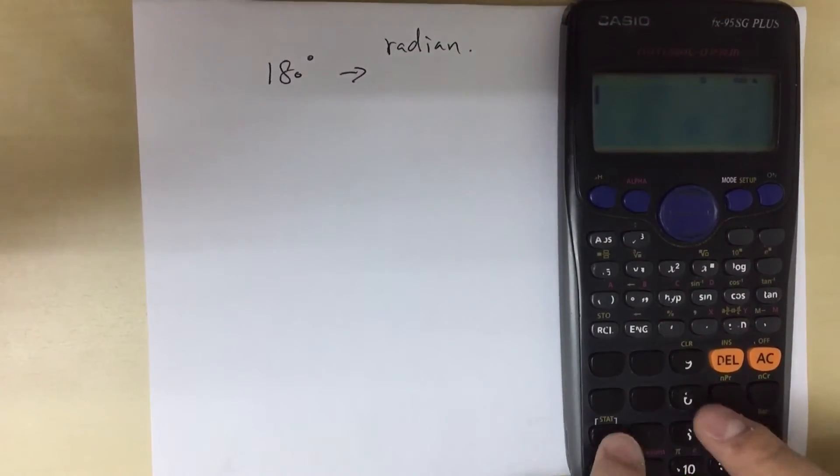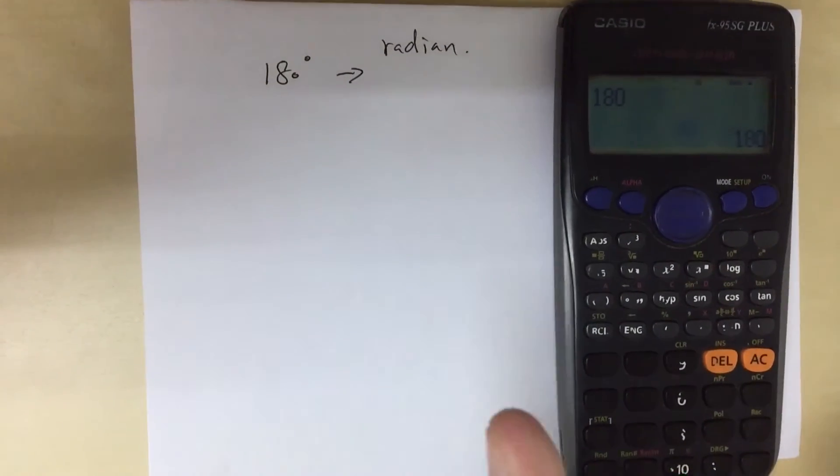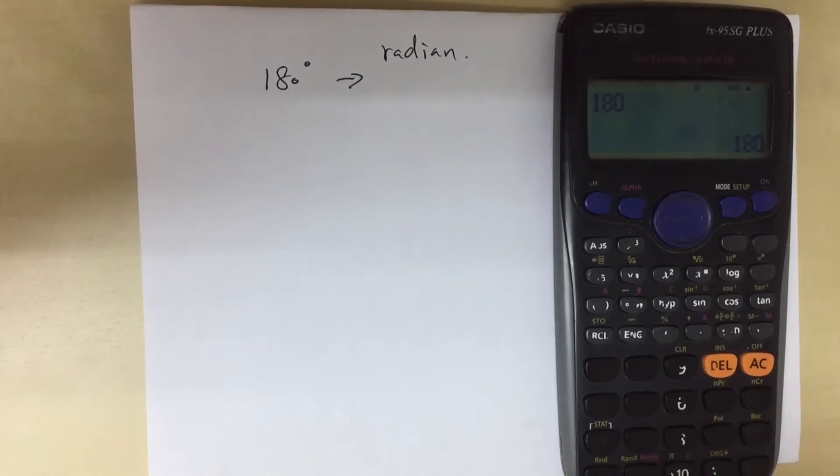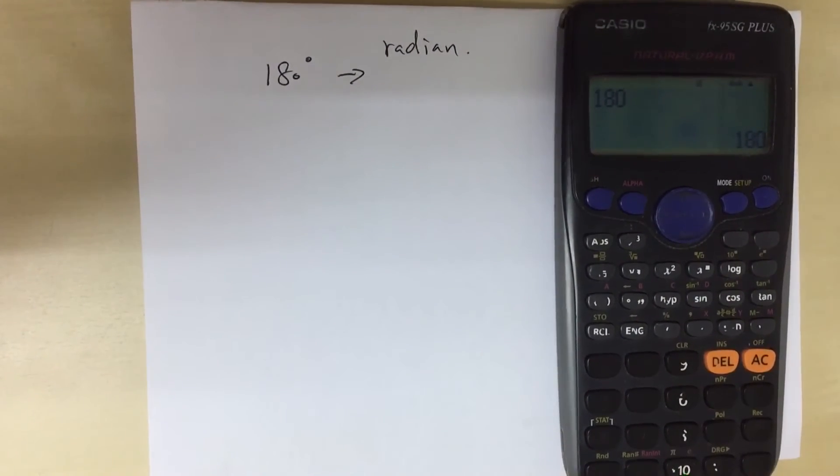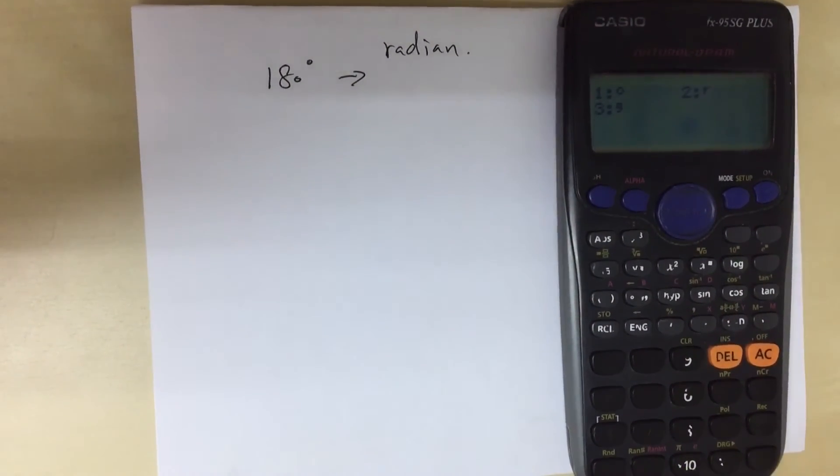Now I press 180 because this is my degree mode—this is my angle 180 degrees. To convert this 180 degrees to radian, I need to press shift.